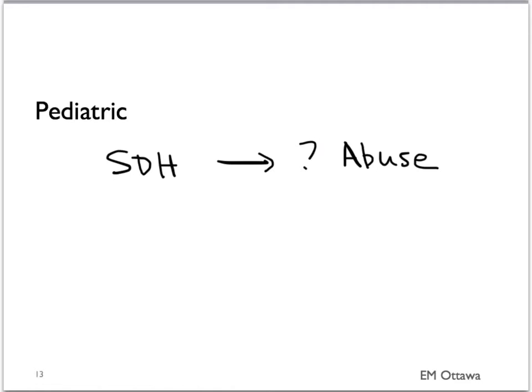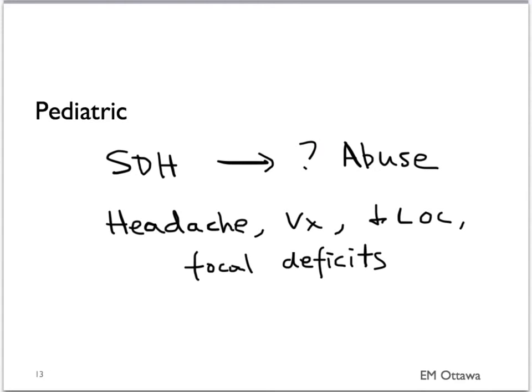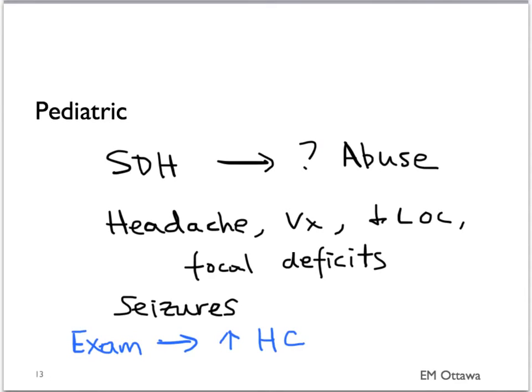In the pediatric population, diagnosis of a subdural hemorrhage should raise our suspicion for potential child abuse. Subdural hemorrhage in this age group will present with headache, vomiting, decreased level of consciousness, or focal deficits. They can also present with seizures. On examination, the patient might have an enlarged head circumference or bulging fontanelles, and may also present with failure to thrive. We need to look for any other signs of child abuse if subdural hematoma is being diagnosed.